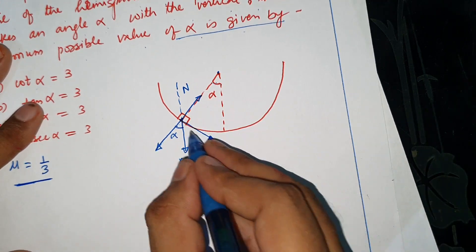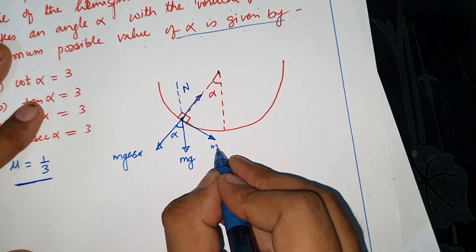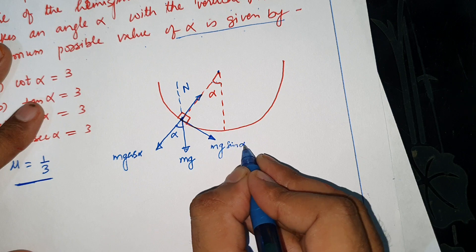So, if we resolve this mg component, then this will be mg cos alpha and this will be mg sin alpha.